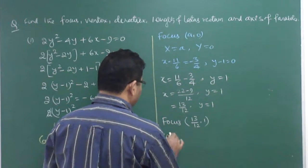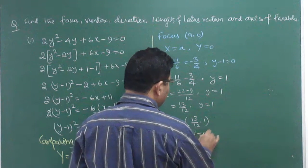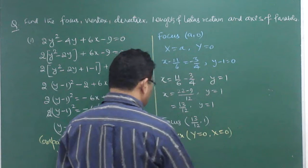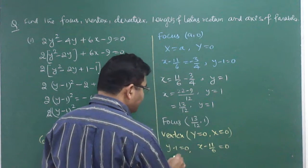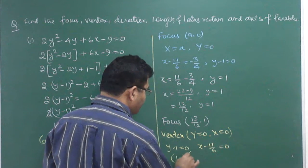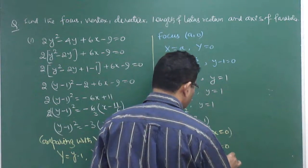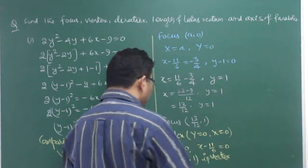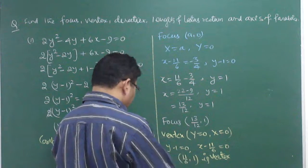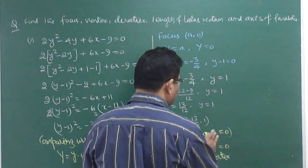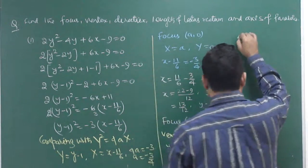Now the vertex. For Y² = 4aX, vertex is at (0, 0), meaning X = 0 and Y = 0. So x - 11/6 = 0 gives x = 11/6, and y - 1 = 0 gives y = 1. The coordinate of the vertex is (11/6, 1).